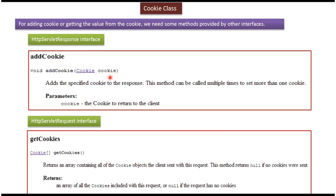If you want to add a cookie to the response object, you can use the addCookie method, which is available in the HttpServletResponse interface. And if you want to get cookies from the request object, you can use the getCookies method, which is available in the HttpServletRequest interface. This getCookies method will return an array of cookies.